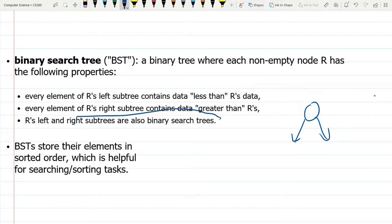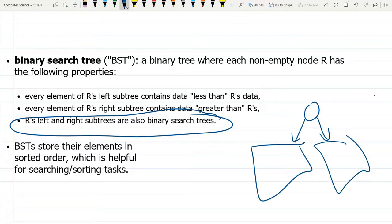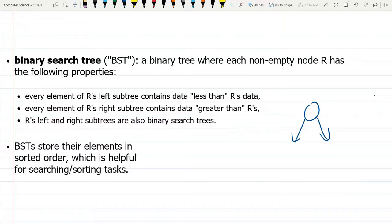Also, the left and right subtrees, so there could be two trees down here, each of these trees themselves has to also be a binary search tree. So there's an ordering that has to happen.